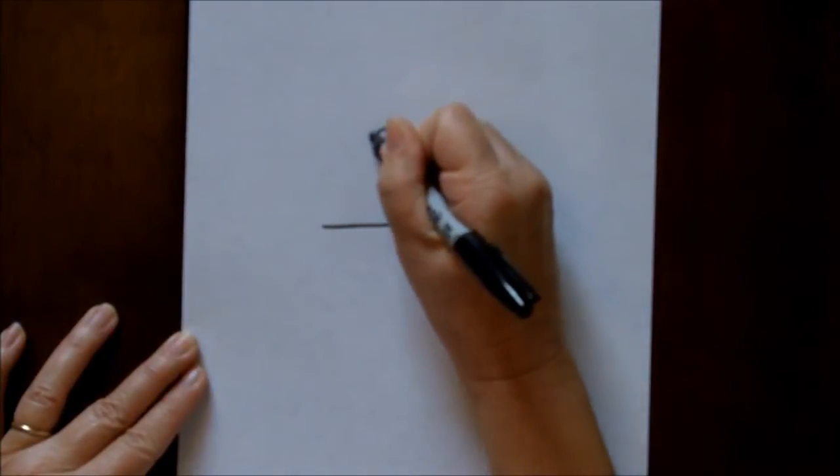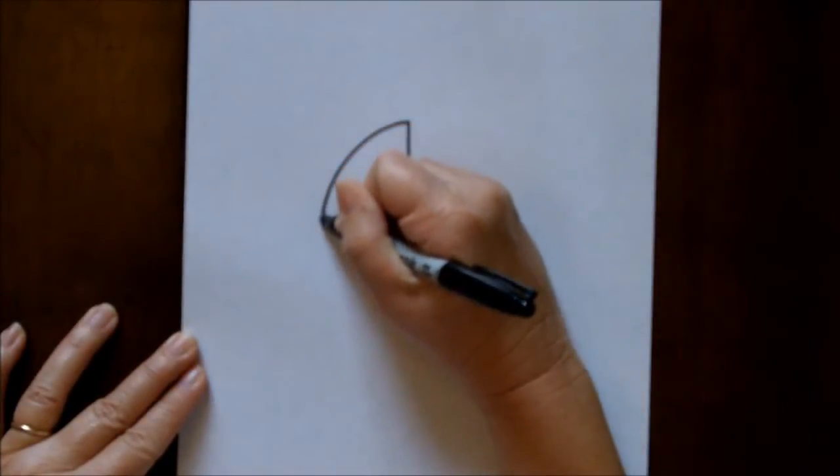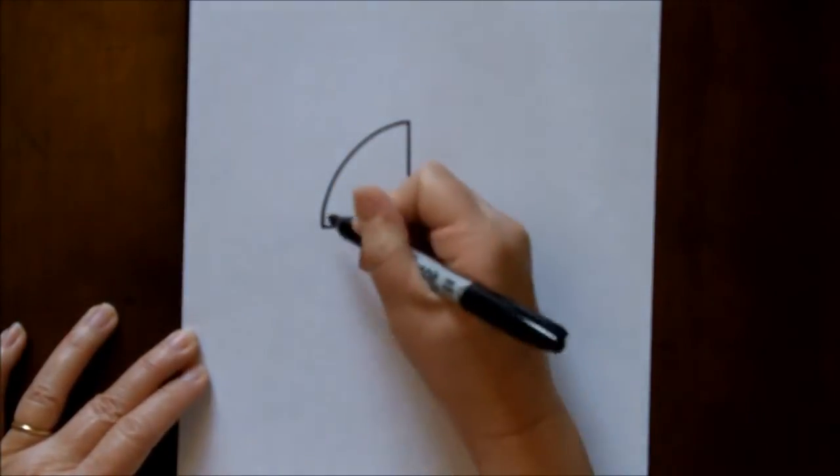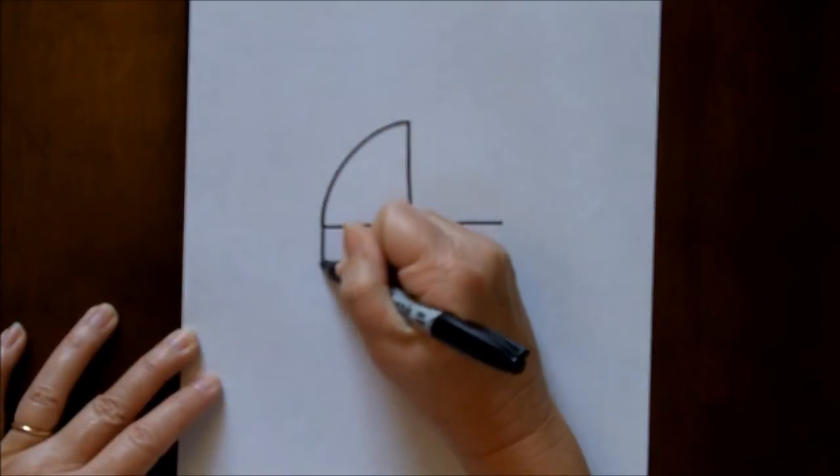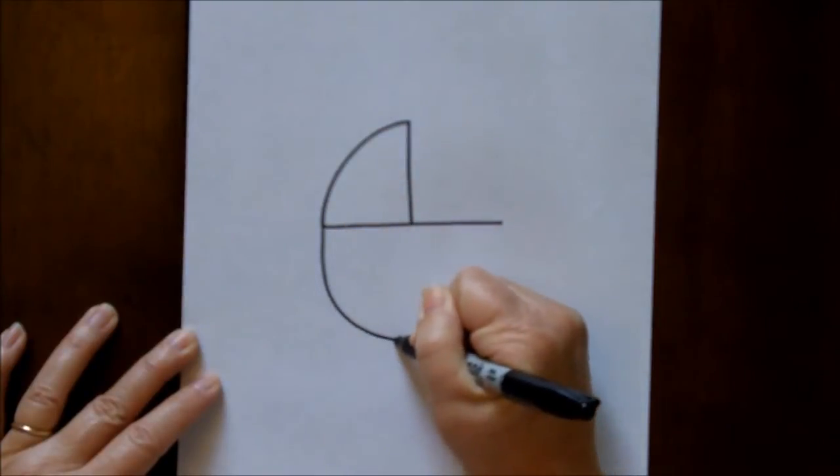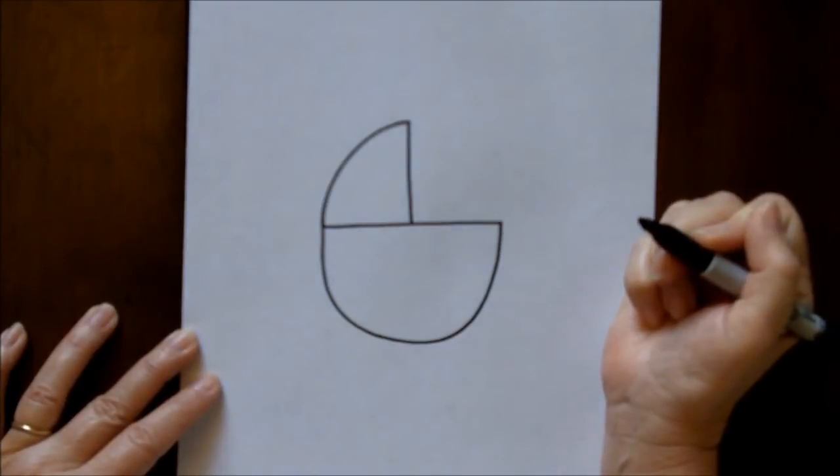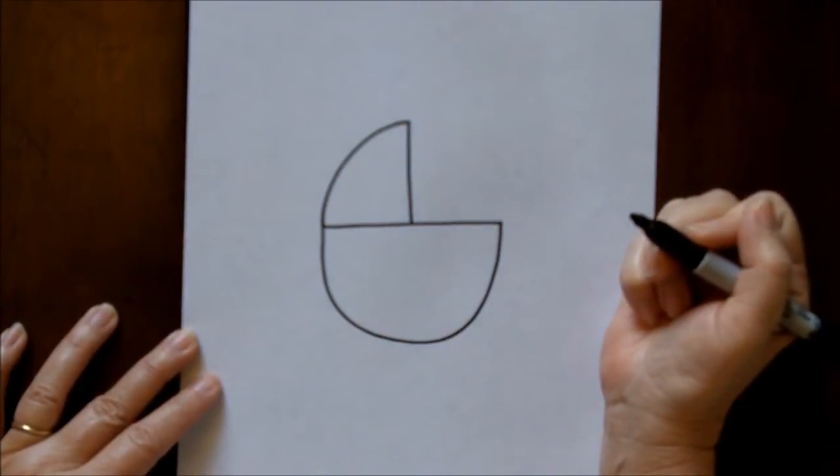Then we are going to make a curved line between the top of this line and the end of this line. Then we're going to make a U-shape that attaches this side of the line to this side of the line. That's the basic shape of the carriage.